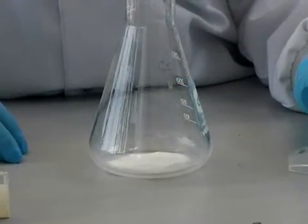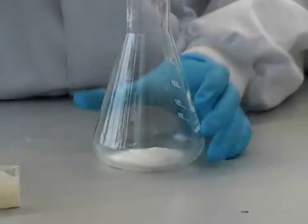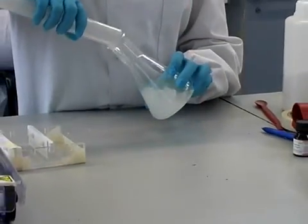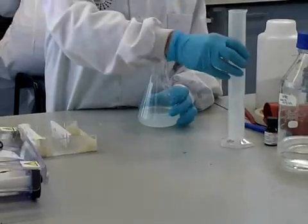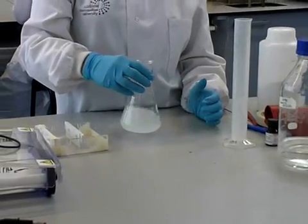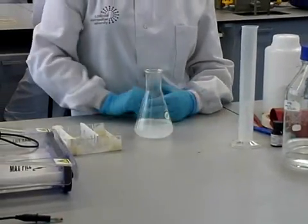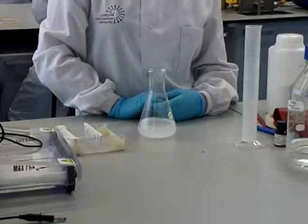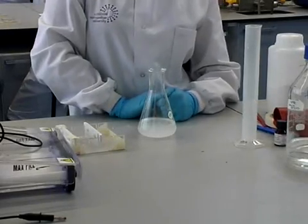One gram of agarose gel has been weighed into the conical flask and to this is added the 100ml of Tris-Borate EDTA. This is mixed and the solution will be heated to dissolve and melt the agarose, then it will be poured into the gel former.